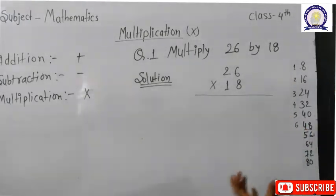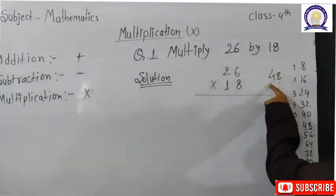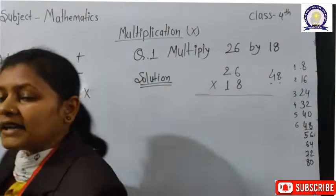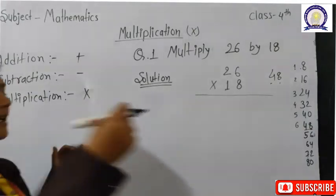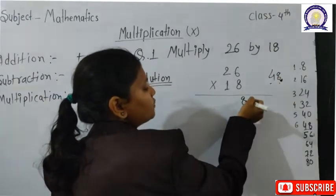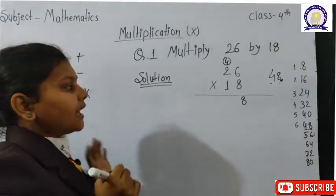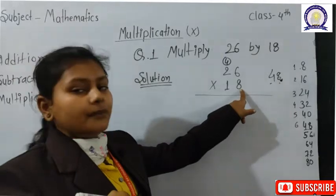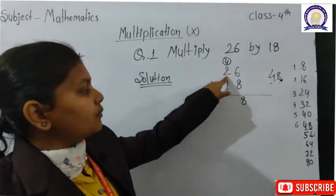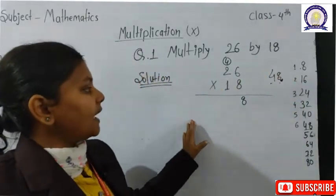So here I write the 8 times table: 8×1=8, 8×2=16, 8×3=24, 8×4=32, 8×5=40, 8×6=48. We read the 8 times table 6 times, so the answer is 48.